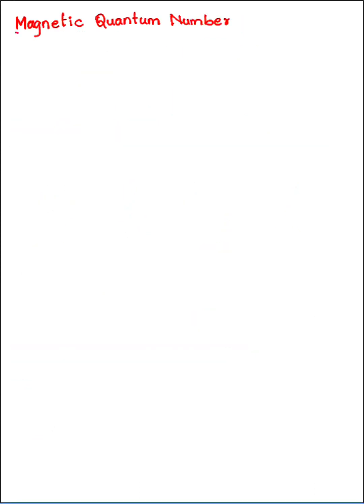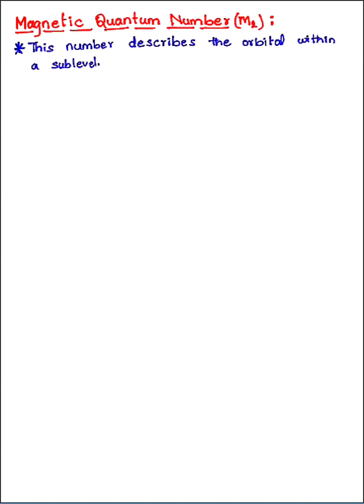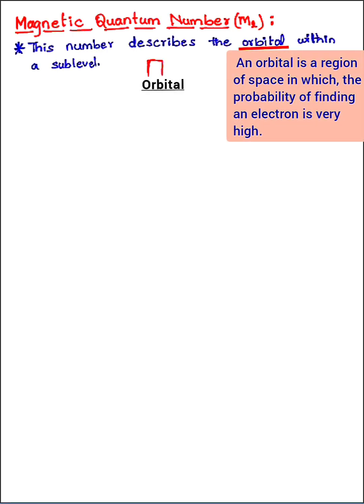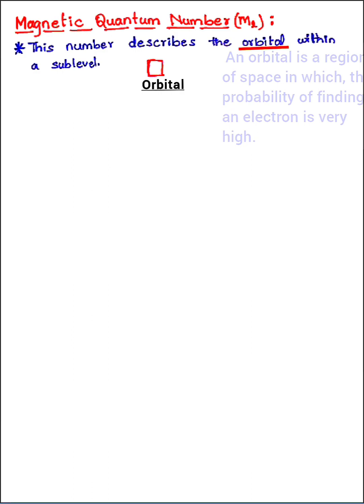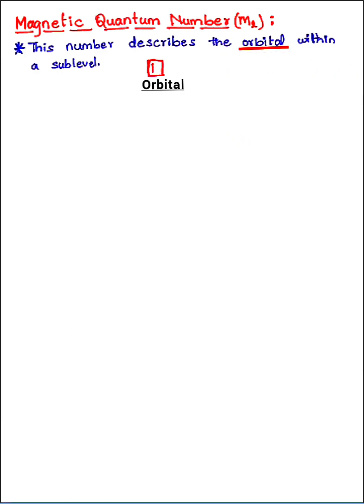Now let's move on to the third quantum number — the magnetic quantum number, represented by the symbol m_l. This number describes the orbital within a sub-level. An orbital is a region of space where the probability of finding an electron is very high. Every orbital can hold a maximum of two electrons.